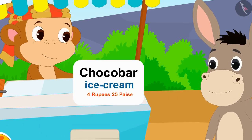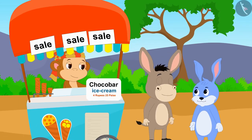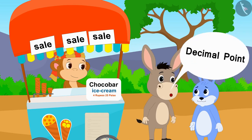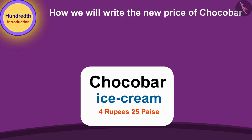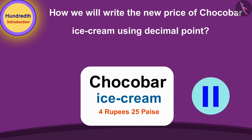Seeing the new price of Chocobar ice cream — Rs. 4.25 — Bhola told Bunny, Bunny, I can write the new price of the ice cream using a decimal point. Children, can you tell how we will write the new price of Chocobar ice cream using a decimal point? If you wish, you can stop the video and find the answer.